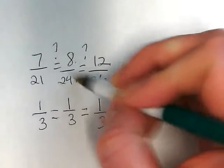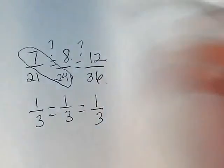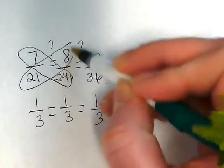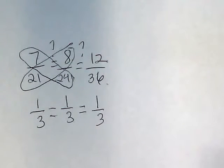I could cross-multiply 7 times 24 and 8 times 21. If those numbers come out the same, I can feel pretty confident this is going to work. But I also have to check the other ratio.